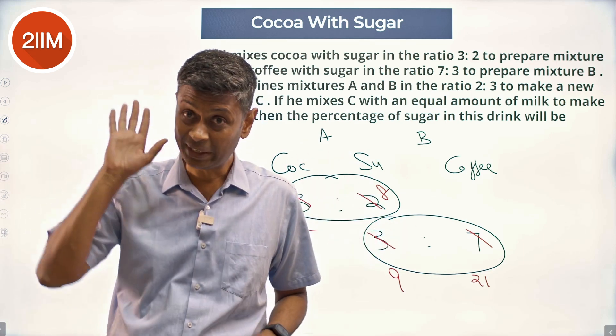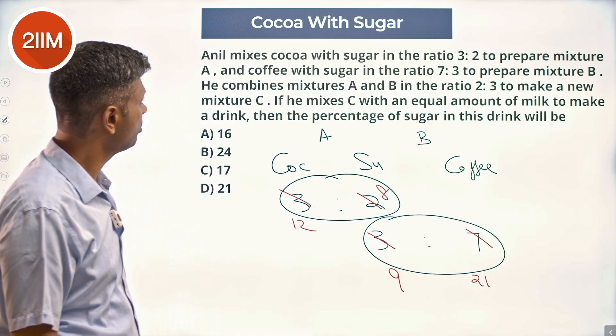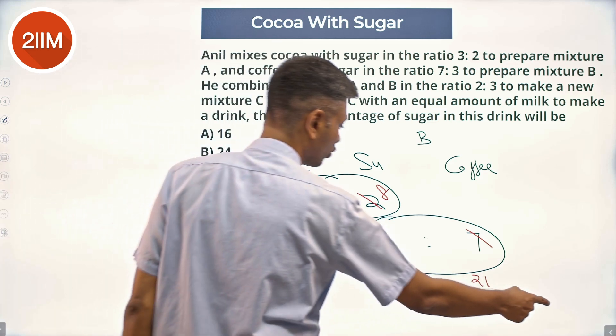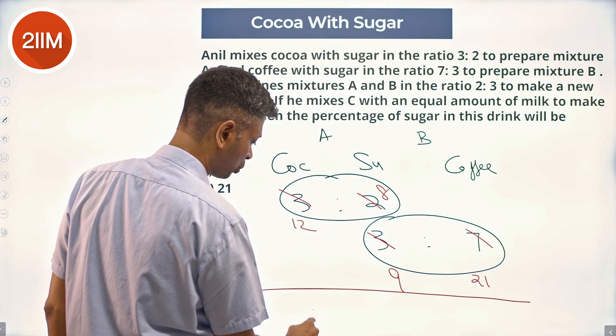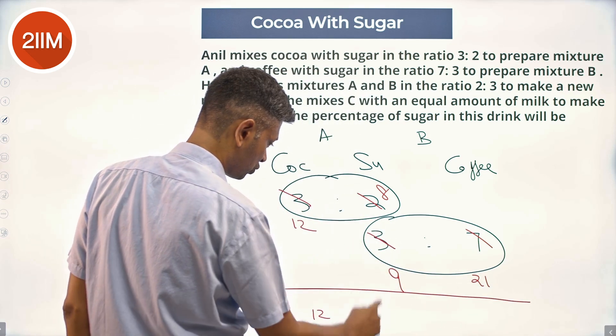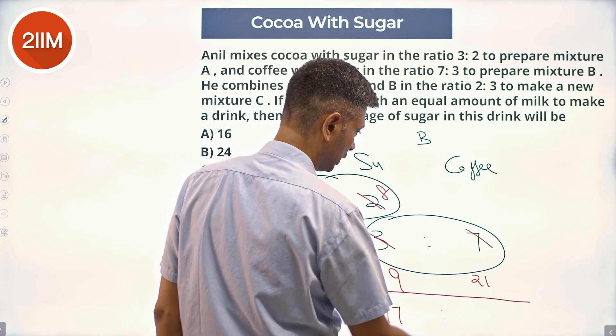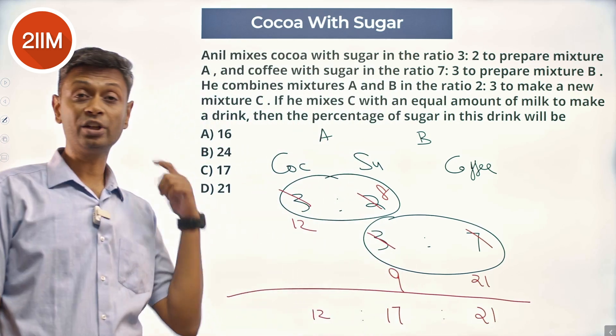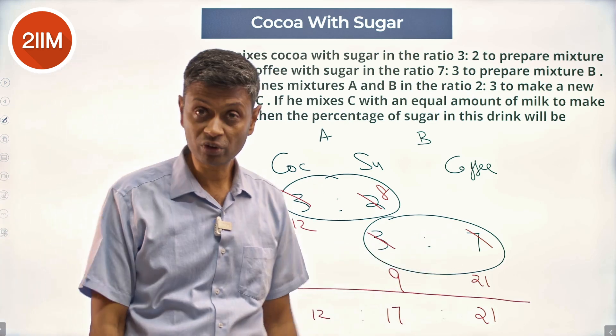The 3 to 2, 3 to 7 are maintained. Mixtures in the ratio 2 to 3 to make a new mixture C. So, mixture C will have 12 units of coffee—sorry, 12 units of cocoa, 17 units of sugar and 21 units of coffee.